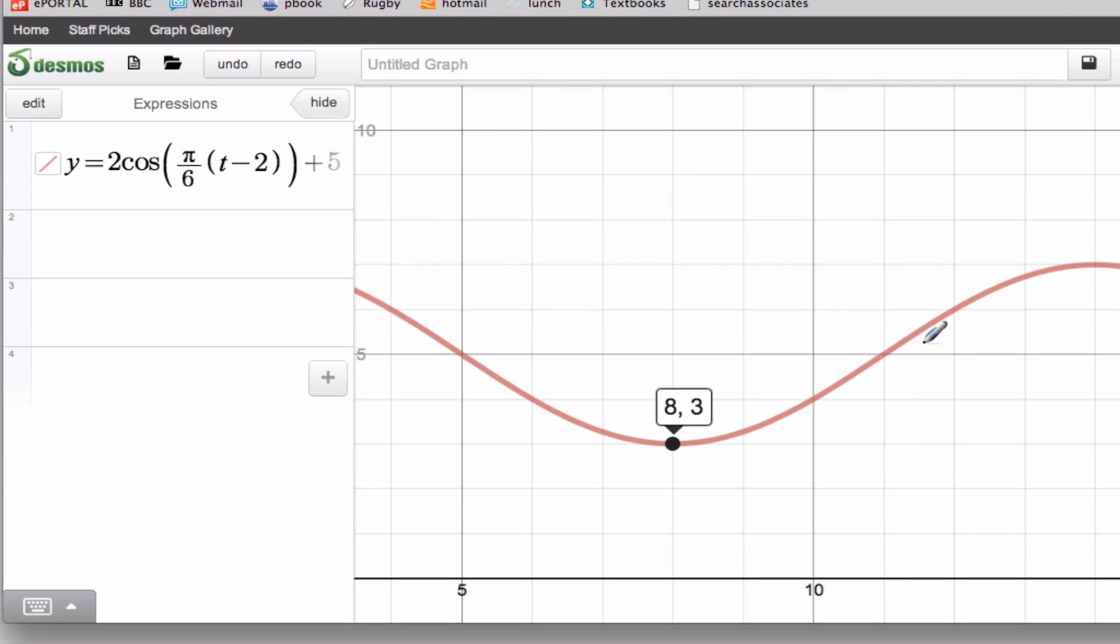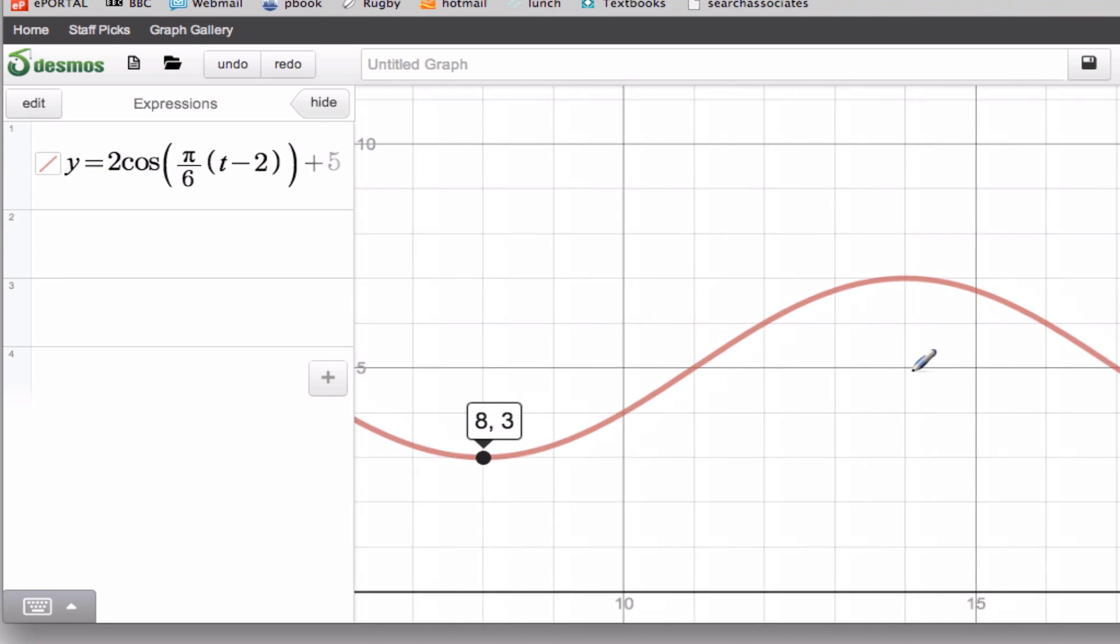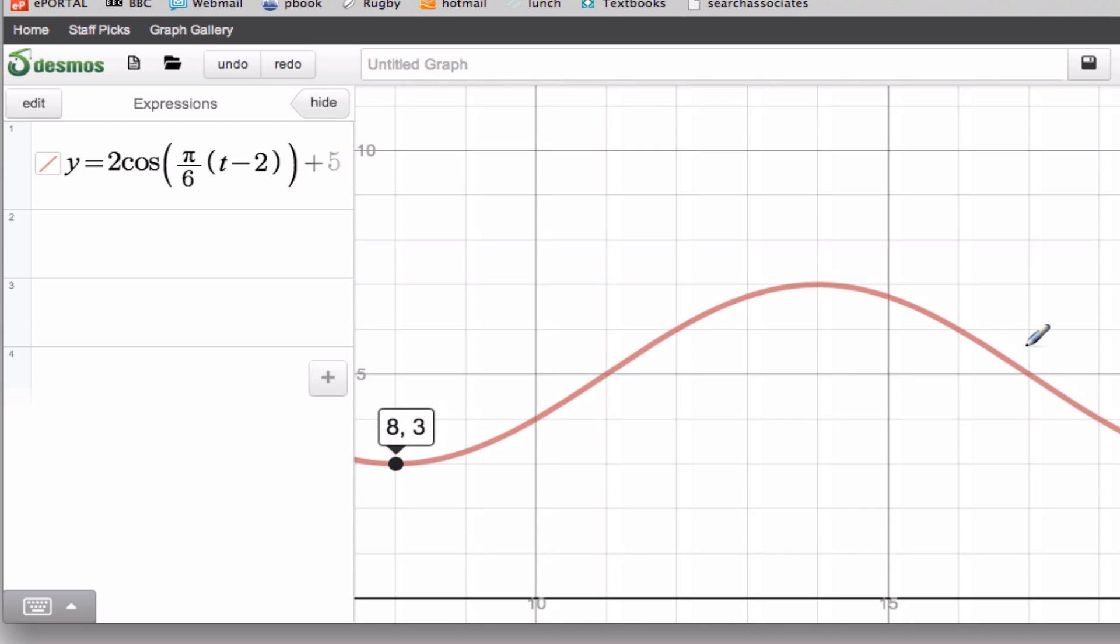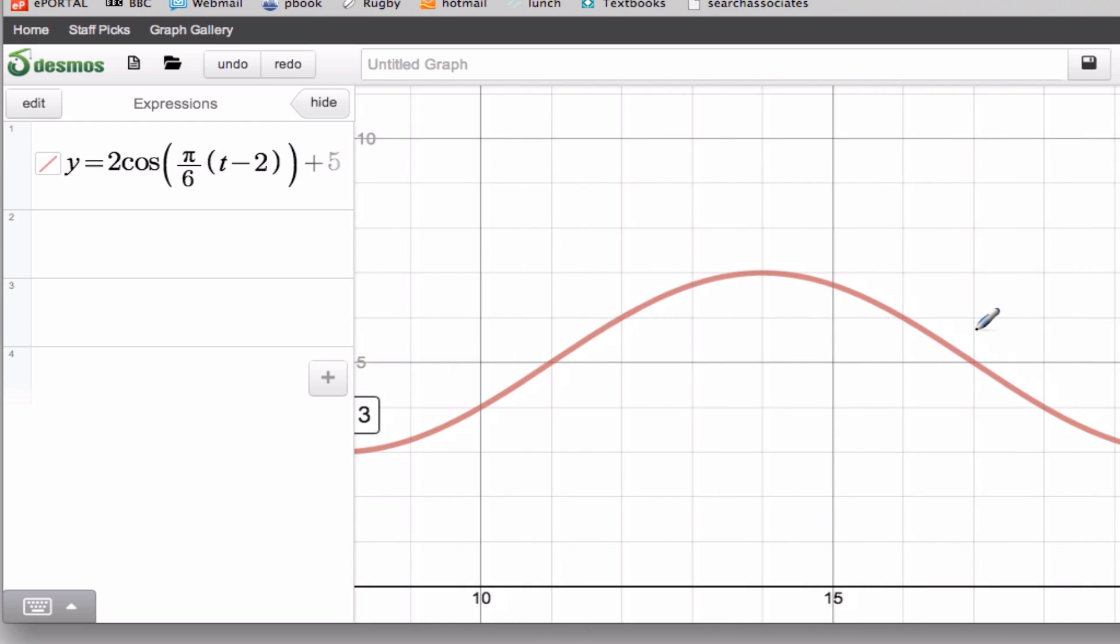All right, so 7 a.m. the next day is gonna be, well here's 12. That's gonna be midnight. So we need to be up to 7 is gonna be 19 then. So yeah that's right 19. I'm gonna be here. So 19. Here we go. 3.268.